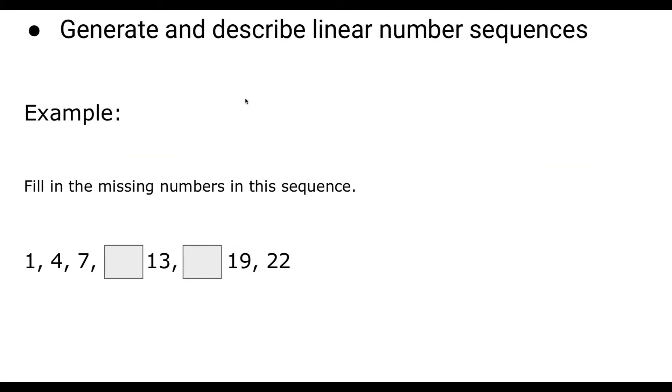The next thing you need to be able to do is to generate and describe linear number sequences. This is probably the easiest element of algebra in many respects. So let's have a look at an example. Fill in the missing numbers in the sequence. So all we need to do is work out how much is it going up by. Well, if we were to count on 3 more, we get to 4. Count on another 3, we get to 7. So it's going up in 3s. Add another 3, 7 add 3 is 10. Add another 3 makes 13. Add another 3 makes 16. Add 3 makes 19, so it's going up in 3s. That's all we need to do is fill in those missing spaces there.